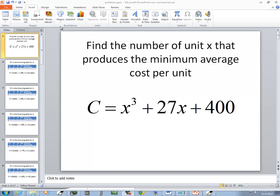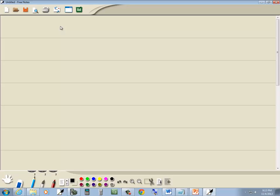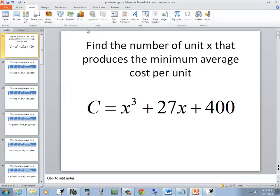Let's take a look at this problem. Find the number of units x that produce the minimum average cost per unit.